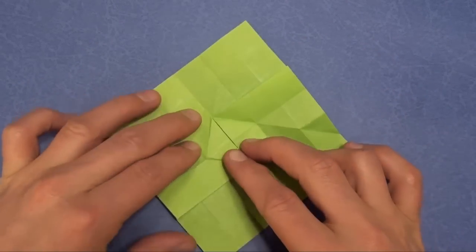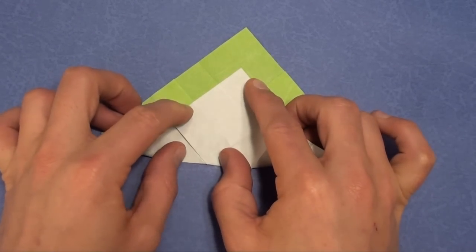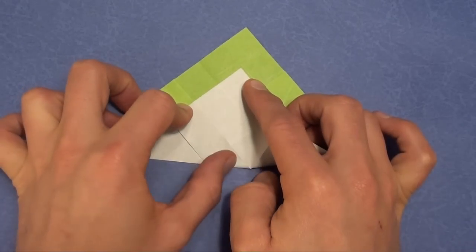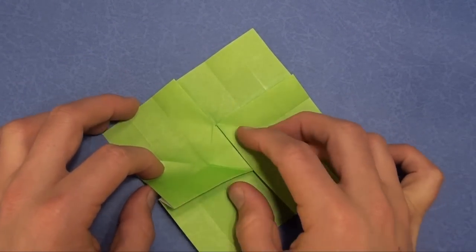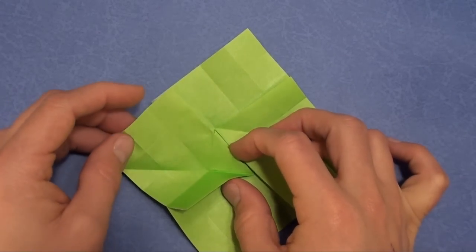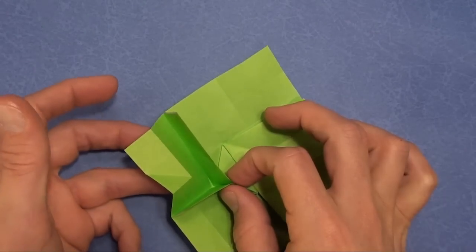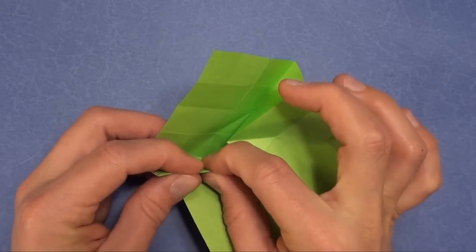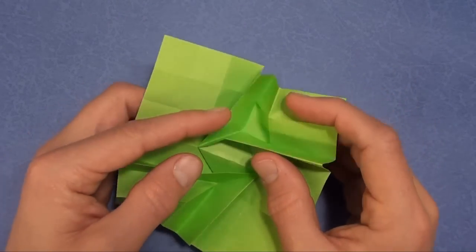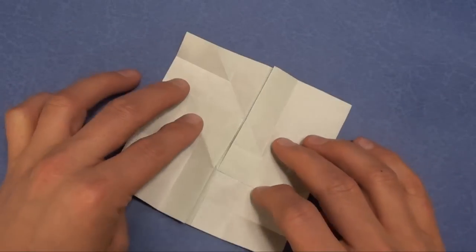So rotate it. We first fold it. We're bisecting this angle. Now we pinch here. Lift the paper from behind. Squeeze. Now we're going to do the same thing on the other side.